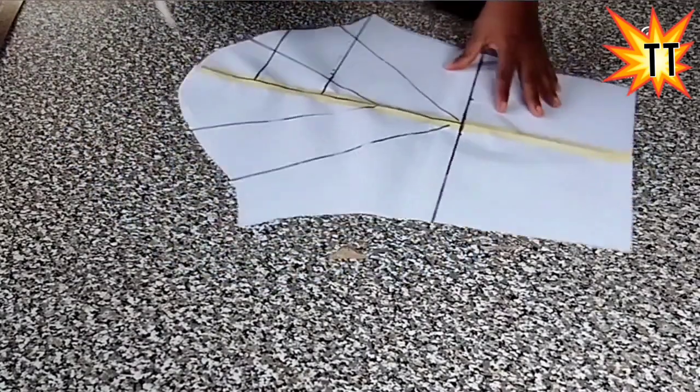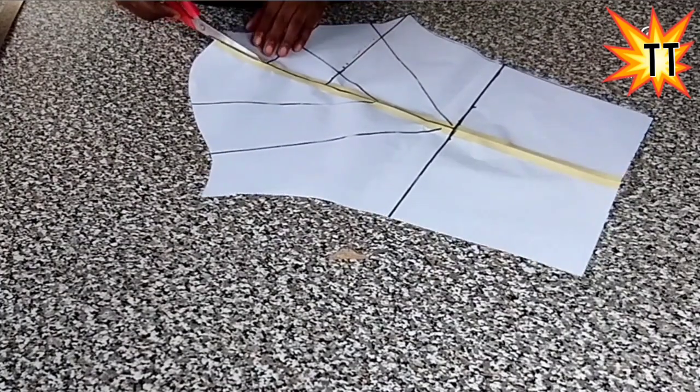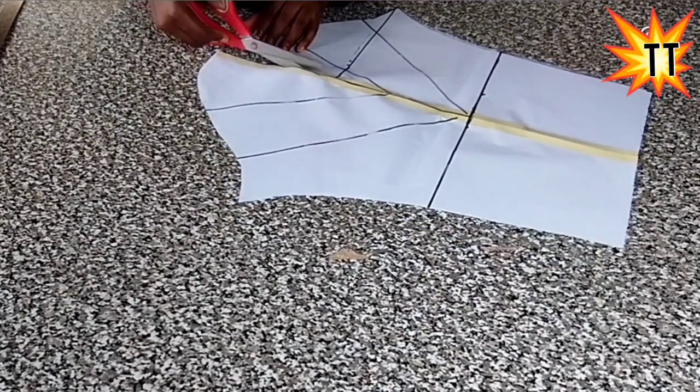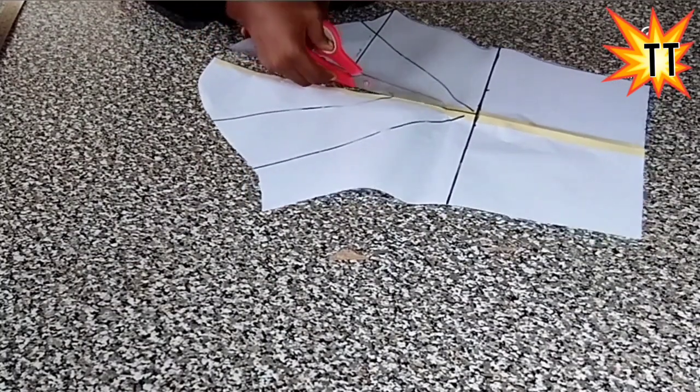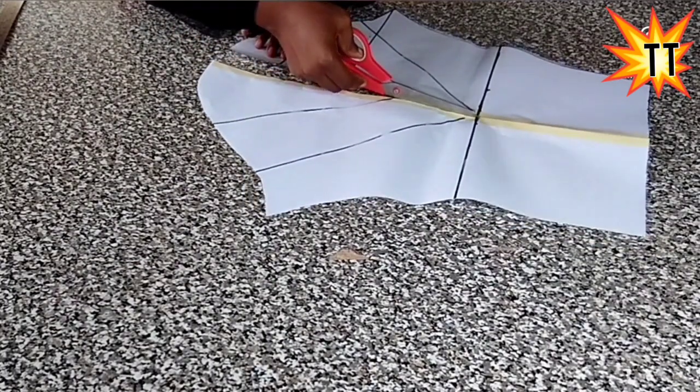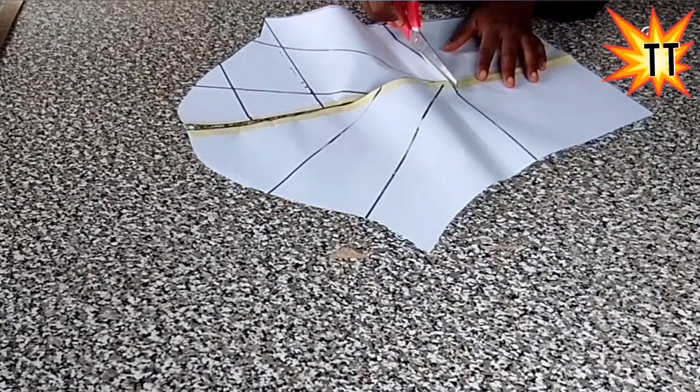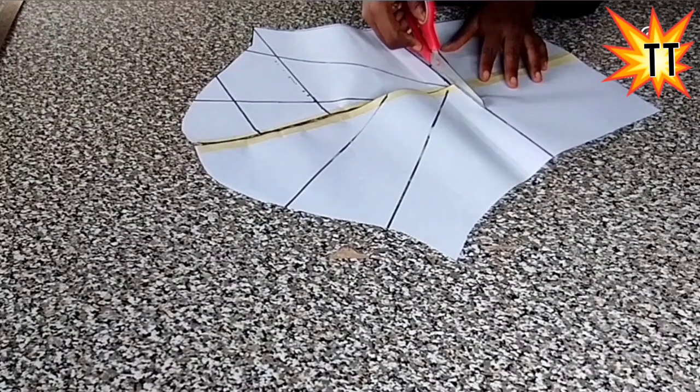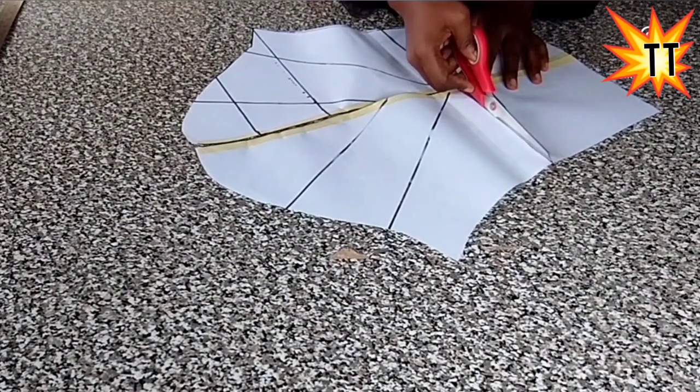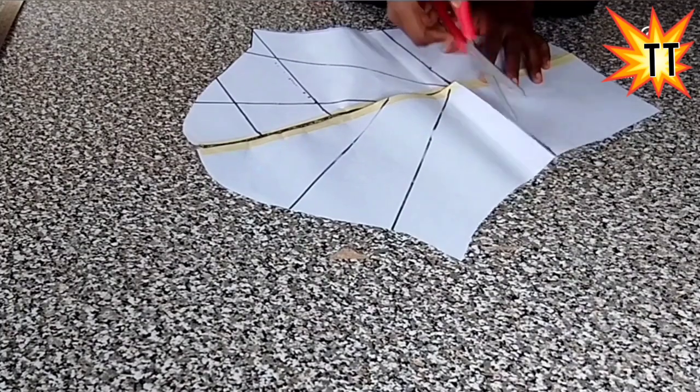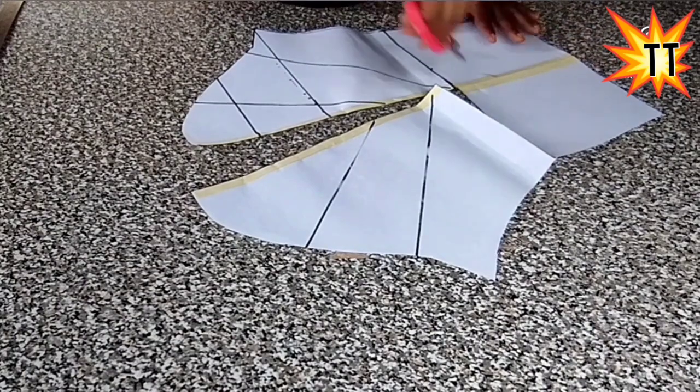So I cut it open. Don't mind me using scissors, I'm supposed to use cutter but my cutter is not around here. Okay, to this point, open it up. Easy, so that you don't cut it into two bits. If you cut it, you use your masking tape to just hold it.